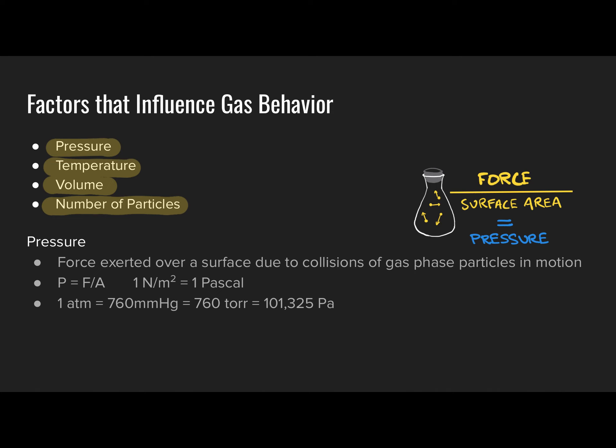The SI unit for pressure is the Pascal, where by definition a Pascal is one Newton of force distributed over a surface area of one square meter — a Newton per square meter. A Newton is a fairly small amount of force, equivalent to about a quarter pound. A square meter is a pretty big surface area, so one Pascal is a very small incremental unit of pressure. As such, more commonly you will see units of kilopascal — that is, thousands of Pascals.